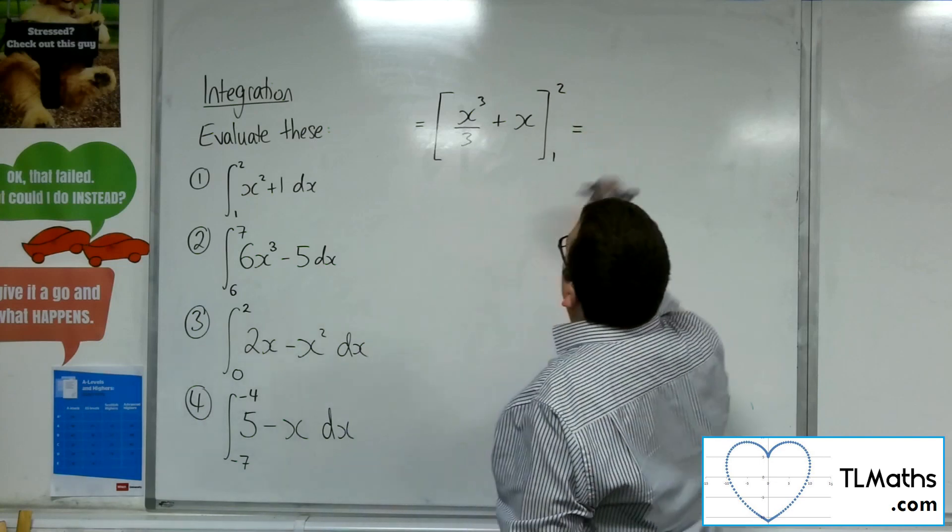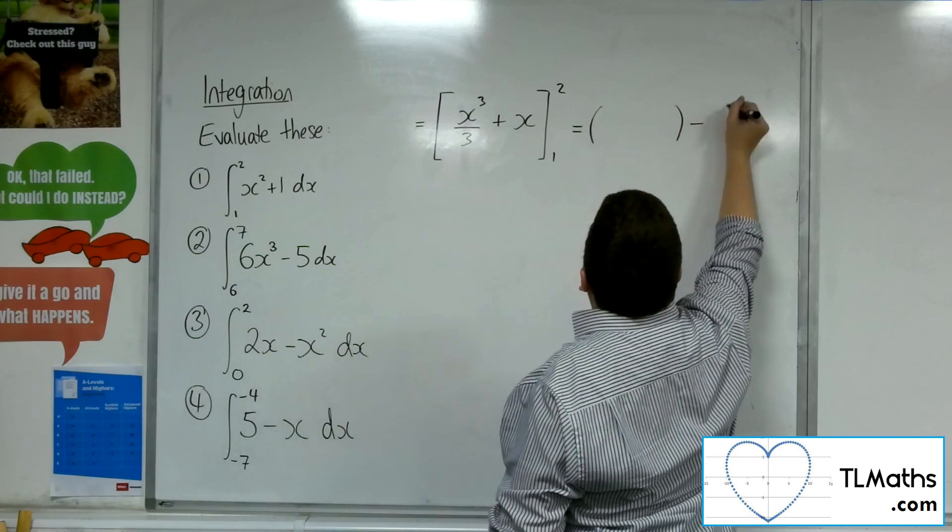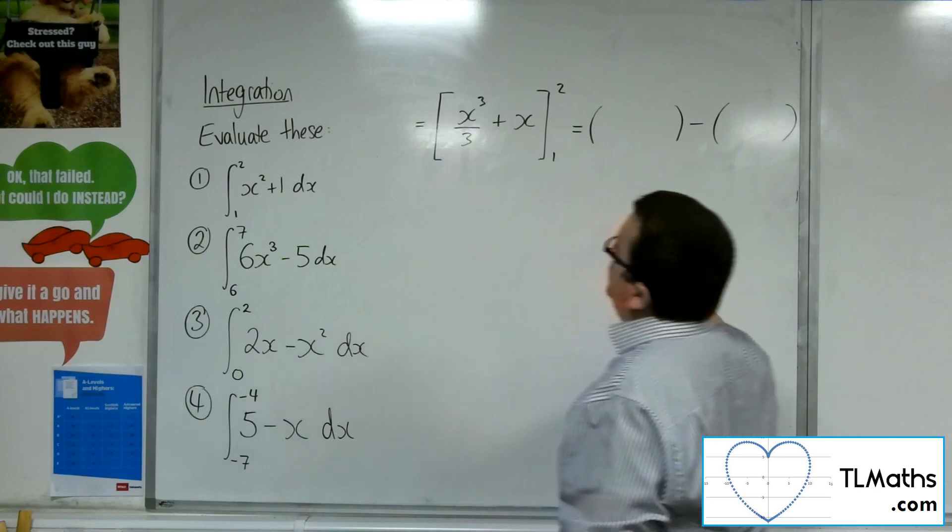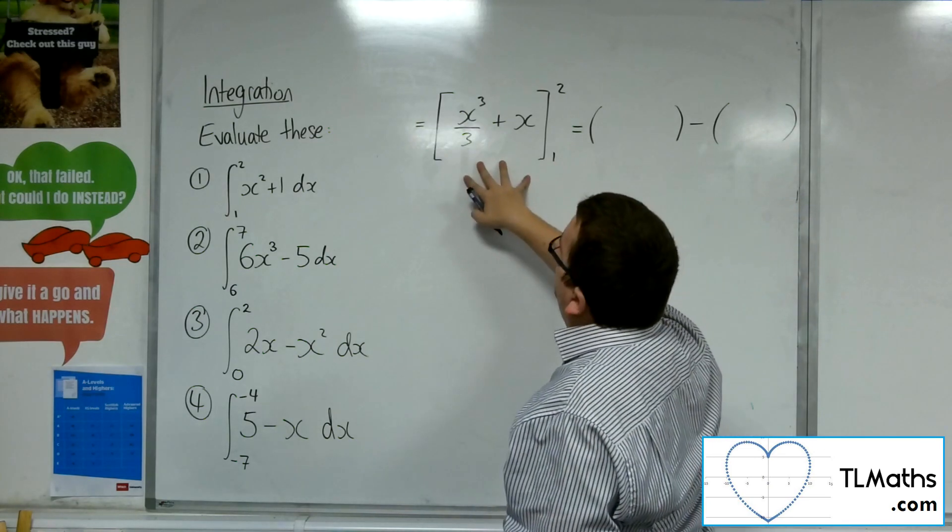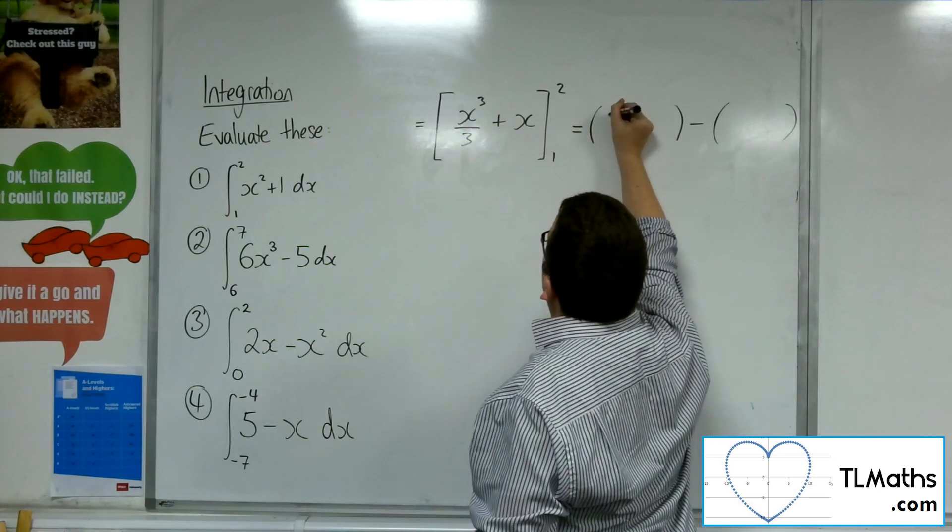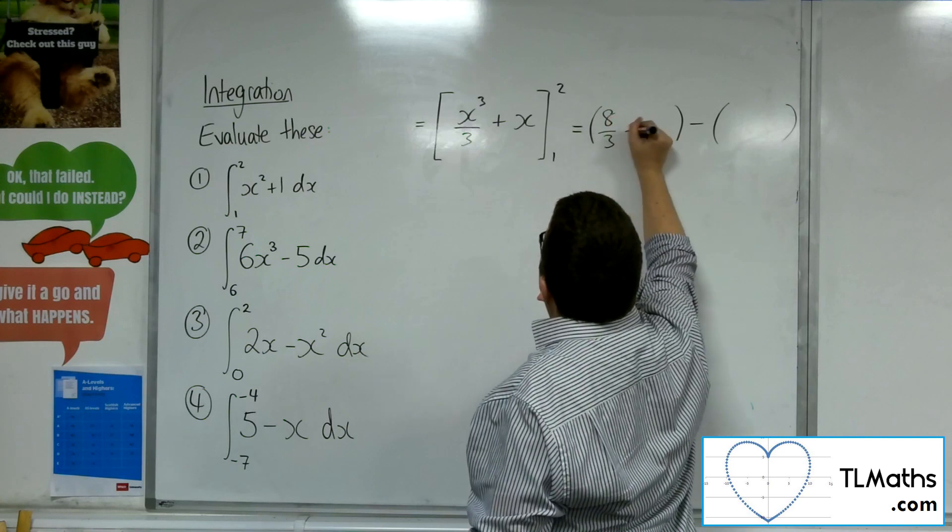And so then we can open up two sets of brackets ready to substitute in. Substitute the 2 in first, so we're going to get 2 cubed over 3, so 8 over 3 plus 2.